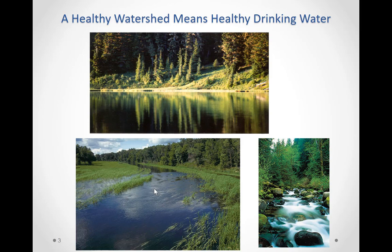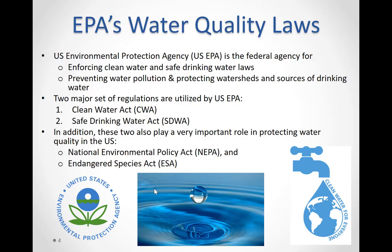Healthy watersheds in turn ensure sources of safe and clean drinking water. The EPA enforces federal Clean Water and Safe Drinking Water laws, provides support for municipal wastewater treatment plants, and takes part in pollution prevention efforts aimed at protecting watersheds and sources of drinking water. The United States has two major water quality laws: the Clean Water Act (CWA) and the Safe Drinking Water Act (SDWA).